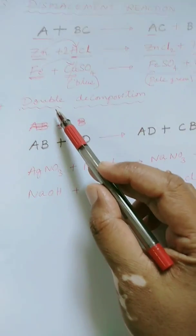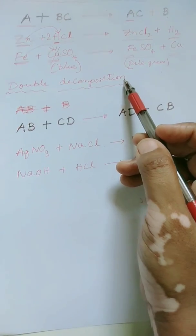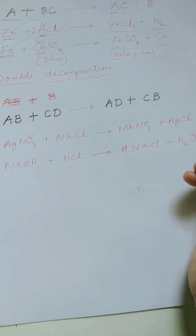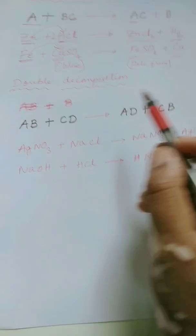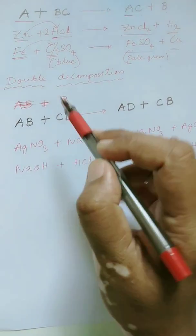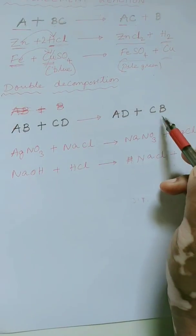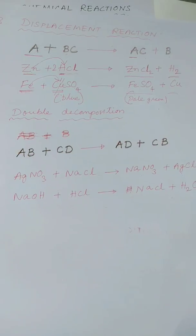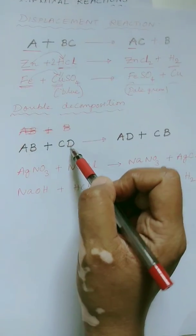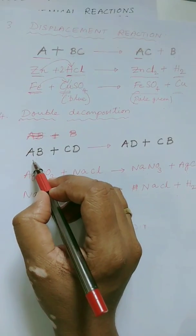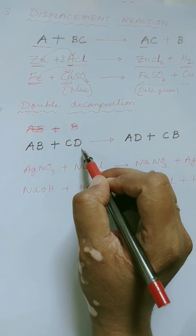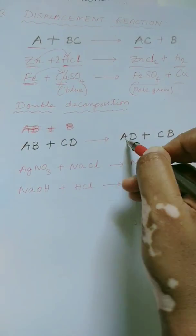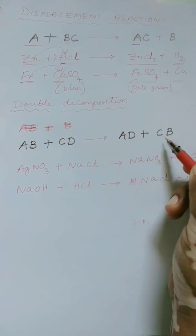Now speaking about the double displacement reactions. Here, two compounds react with each other and exchange their ions, resulting in the formation of two different products. Here is the general equation: compound AB reacts with another compound CD and they both exchange their radicals such that the new products formed would be AD and CB.